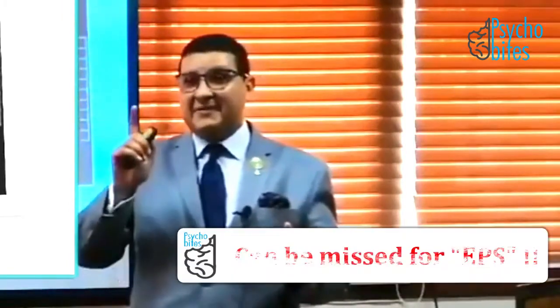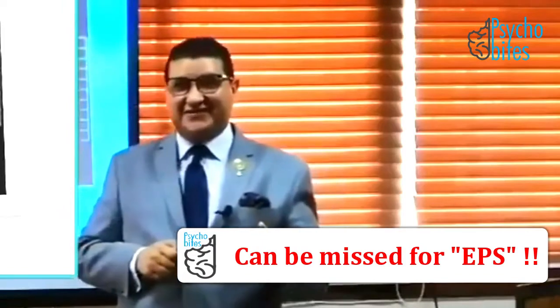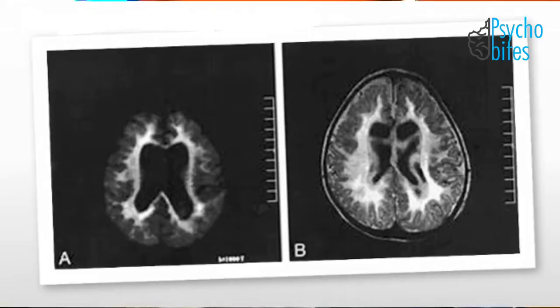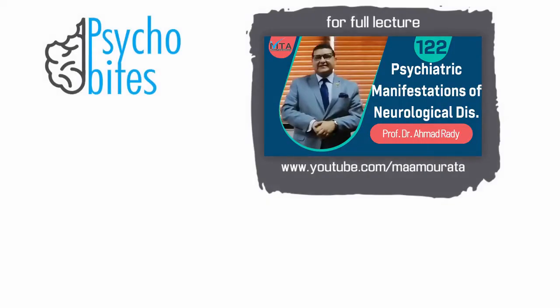The bilateral pyramidal signs can be missed for extrapyramidal rigidity. Radiology shows dissolution of the white matter, which is why radiological examination is very important as a workup for patients who had no previous psychiatric history, and particularly if there is poor response to treatment.